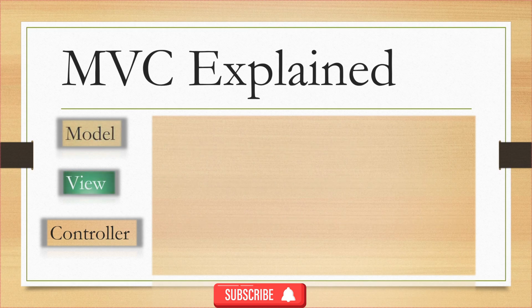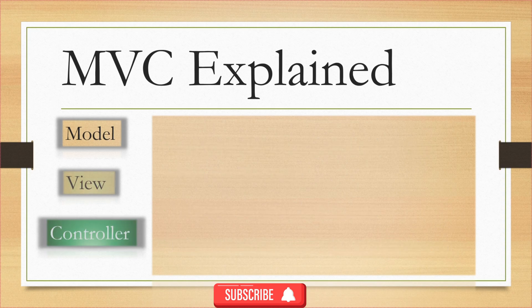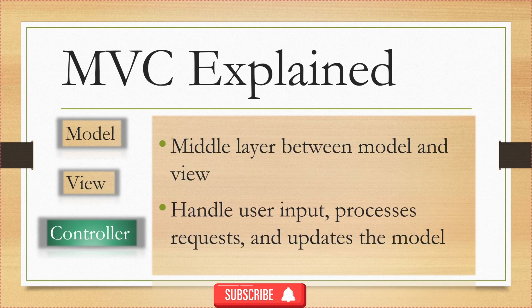The second component is View. The view is responsible for presenting the data to the user in a human-readable format — it's like a user interface to the application. In our social media application example, the view would be an HTML template that displays posts, comments, and other content to the user. The third and last component of MVC is Controller. The controller acts as a middle layer between model and view. It handles user input, processes requests, and updates the model accordingly. In our social media example, the controller would receive requests from the user like adding a comment or creating a new post, then fetch or modify data from the model and pass it to the appropriate view for display.